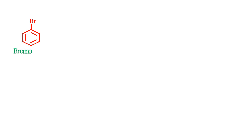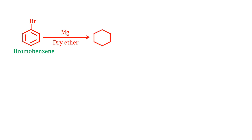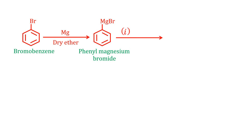This is Bromobenzene. First, it reacts with magnesium in presence of dry ether, giving phenylmagnesium bromide, i.e. Grignard reagent. The Grignard reagent then reacts with acetaldehyde, followed by hydrolysis, giving 1-Phenyl-Ethanol.